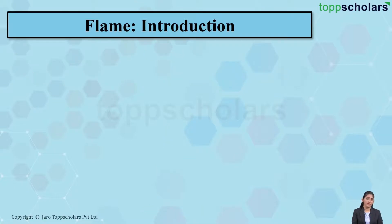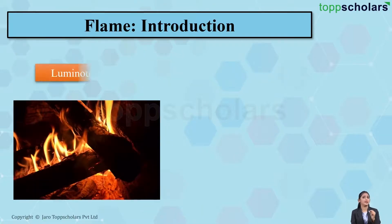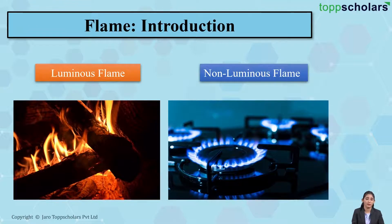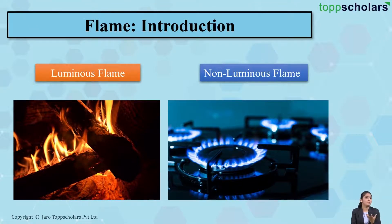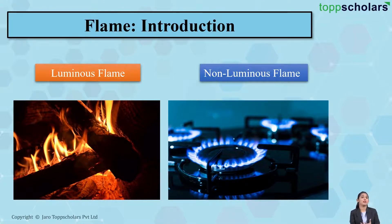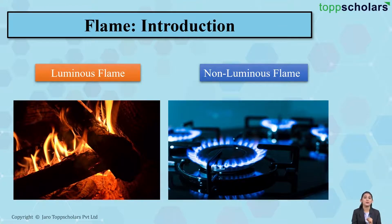We have two types of flames: luminous flame and non-luminous flame. A luminous flame is generally yellow in color. This is because of partial combustion — the unburnt particles present emit yellow light in the flame, making it appear yellow.